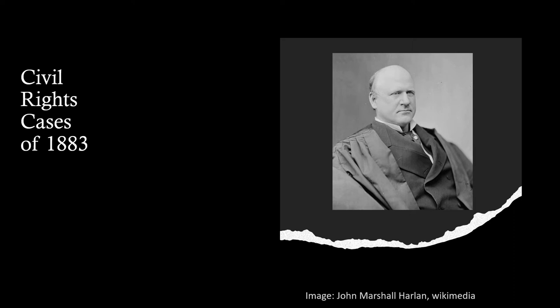Laws throughout the South continued to violate the Civil Rights Act as businesses denied Black people services, accommodations, and access. In the 1883 Civil Rights Cases, the majority declared that the Civil Rights Act of 1875 was unconstitutional. It held that the 14th Amendment did not imply and did not allow for the creation of such a law. It claimed that the amendment had simply stated that no state shall deprive an individual of their rights — it did not say that a private business had to provide rights.